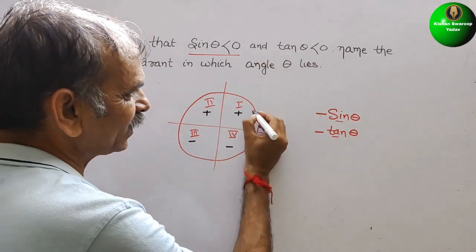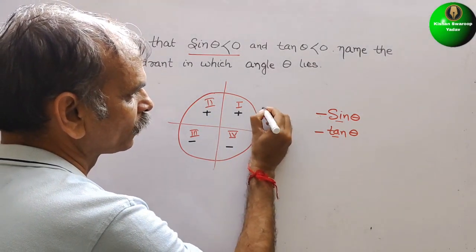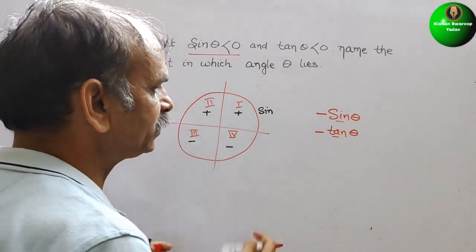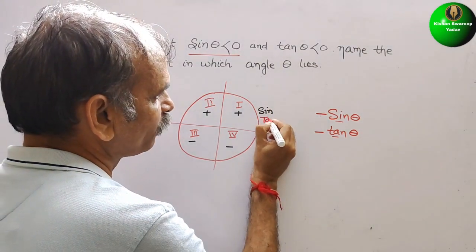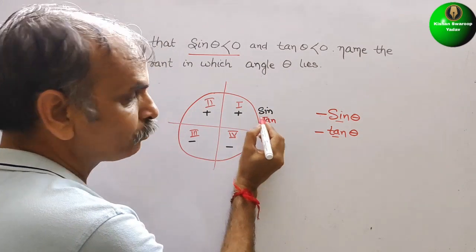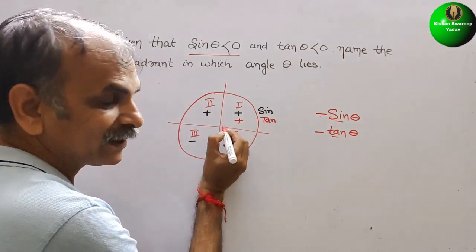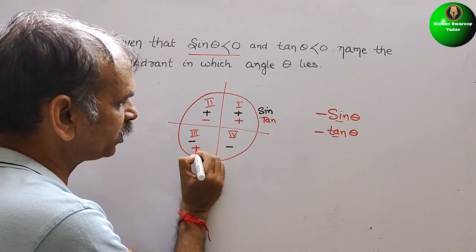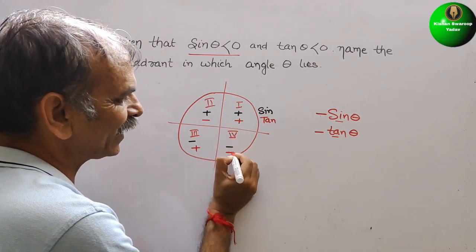But for the tan, what is it? Tan theta. So tan is positive in the first one. Second is negative. Third one is again positive and fourth one is negative.